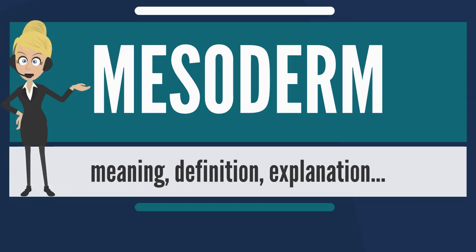In all bilaterian animals, the mesoderm is one of the three primary germ layers in the very early embryo. The other two layers are the ectoderm and endoderm, with the mesoderm as the middle layer between them. The mesoderm forms mesenchyme, mesothelium, non-epithelial blood cells, and coelomocytes.